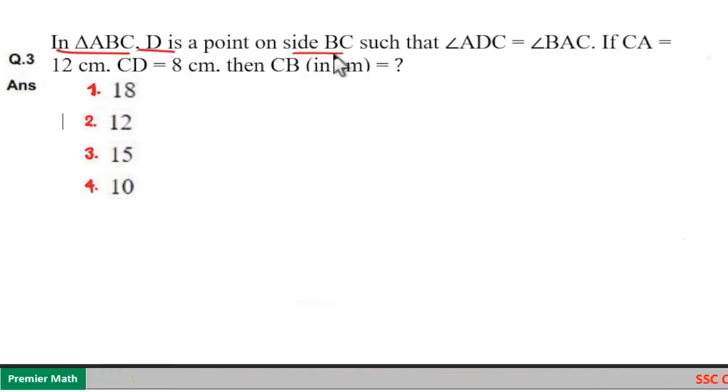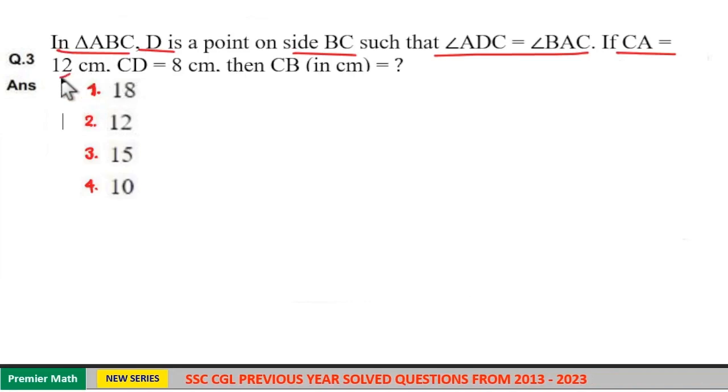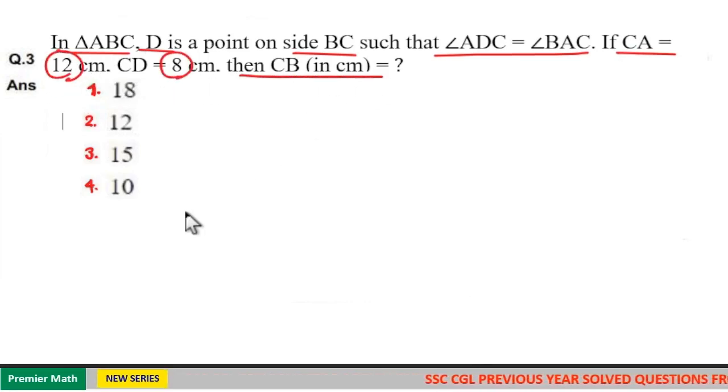In triangle ABC, D is a point on side BC such that angle ADC equals angle BAC. If CA is 12 cm and CD is 8 cm, then CB in cm is?